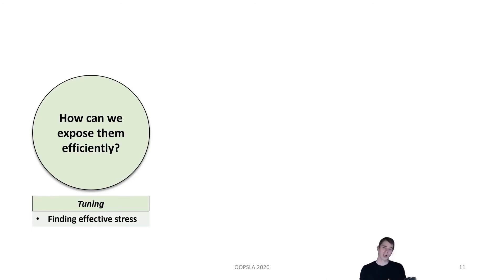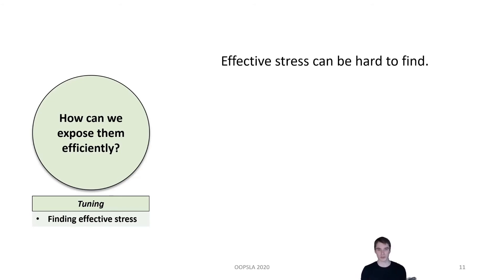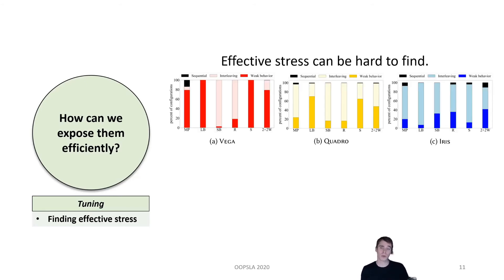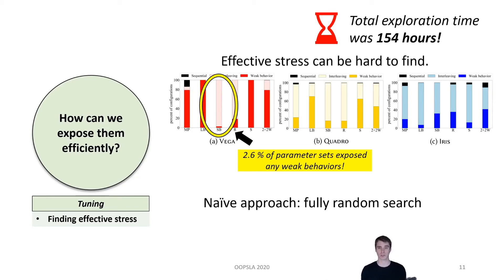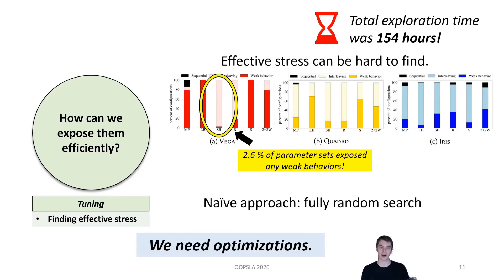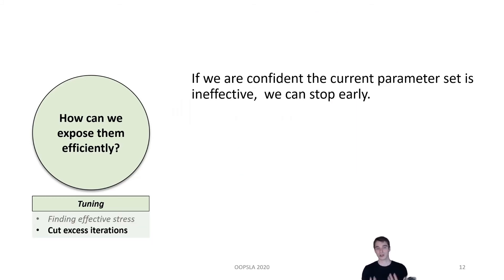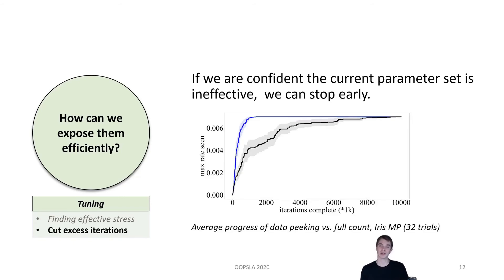This brings us to our next question: how can we efficiently expose weak behaviors? We call this process tuning. Effective stress is often elusive. Looking back to our first graph, we see that only 2.6% of random parameter sets were at all effective on the SB test for the AMD Vega chip. In our case, we explored for 154 hours total. It's clear that a naive, fully random search is infeasible for time reasons. Long story short: we need optimizations. We would like to avoid unnecessary iterations of testing, and we can actually do this by simply stopping when we're statistically confident, through confidence intervals, that the current parameter set is ineffective. This technique, which is called data peaking, actually showed huge speed ups, as you can see here. This chart demonstrates the average progress of data peaking versus a full count method, and we actually saw almost 130 hours of speed up out of the 154 hour total, with no real loss in effectiveness.